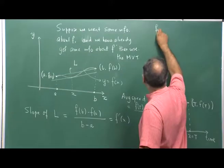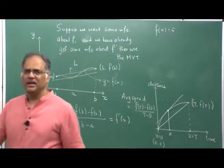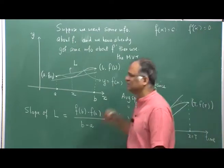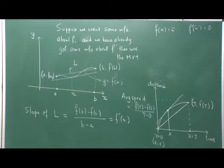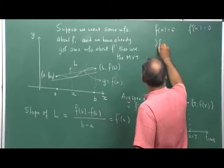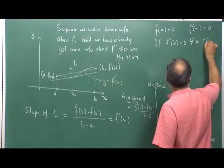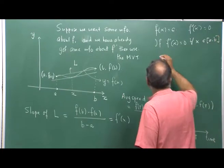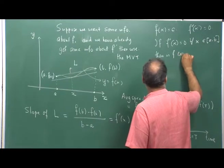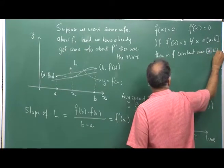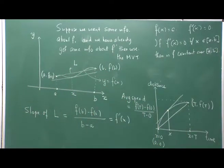If the function f is such that f(x) = constant c, then it is straightforward to prove that f'(x) = 0 at any point x. But if I ask you the reverse question: if f'(x) = 0 for all x in (a, b), is f constant over (a, b)? That is the sort of question we are going to ask.